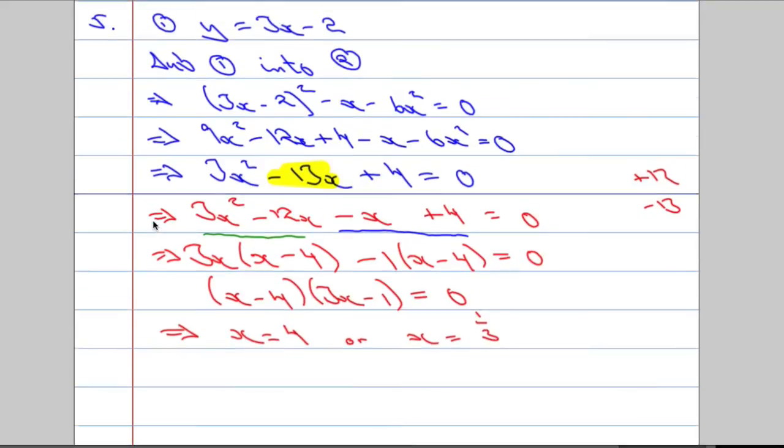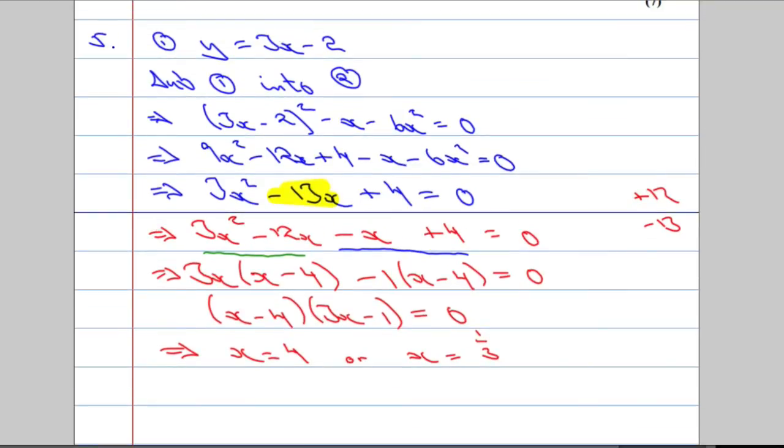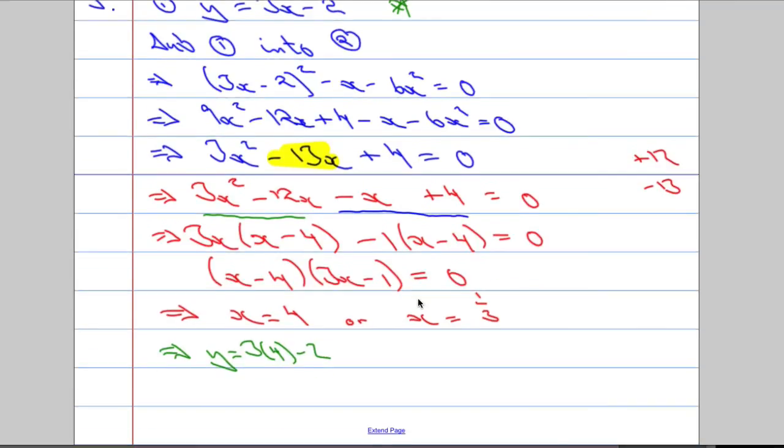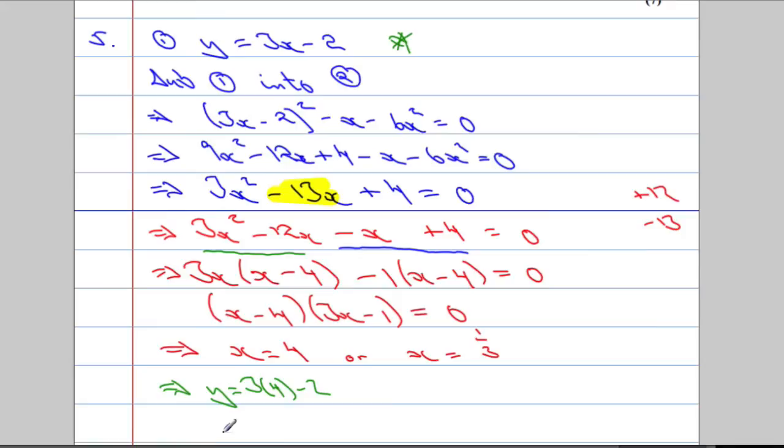Nearly there now. I know the value of x. I'm going to want the value of y. So when x equals 4, we're going to substitute it back into this guy here. So substitute the value 4 in. 3 times 4. So y is going to equal 3 times the 4, subtract 2. Which means y is going to equal 3 times 4 is 12. 12 take away 2 is 10.